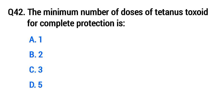Question 42: The minimum number of doses of tetanus toxoid for complete protection is... The right option is D, 5.